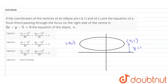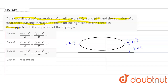Hello friends. In this question we have given the coordinates of the vertices of an ellipse, and the equation of the focal chord passing through the focus on the right side of the center is 2x - y - 5 = 0. So we have to find the equation of the ellipse.